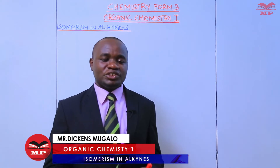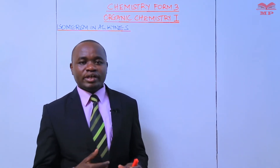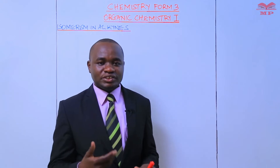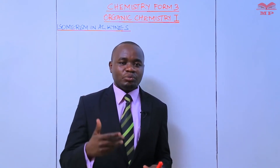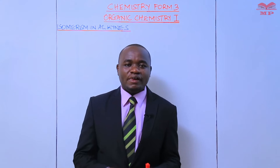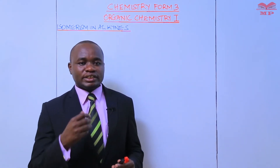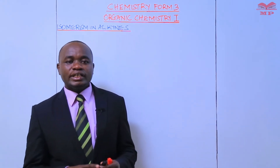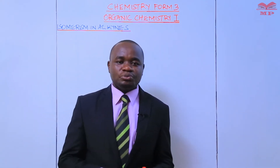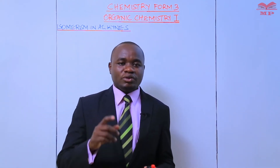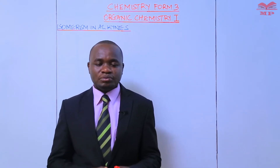We have already seen from the earlier lessons that isomerism refers to the existence of a compound with the same molecular formula but different structural formula. Just like alkynes, alkynes show two types of isomerism: we have branching isomerism and positional isomerism.